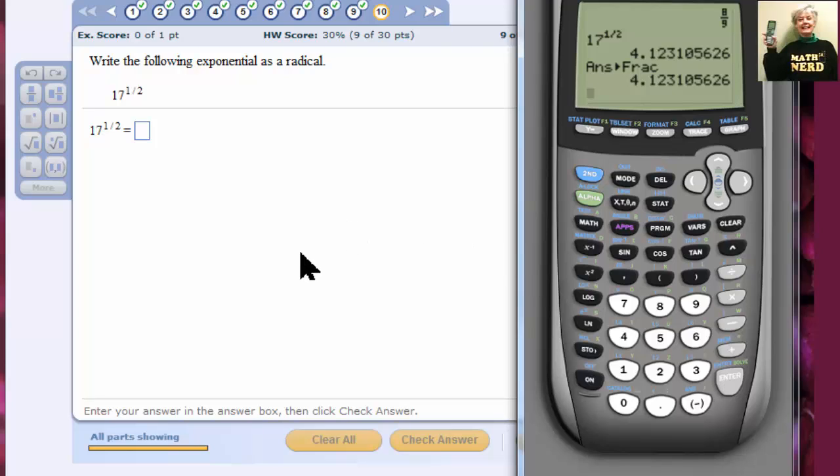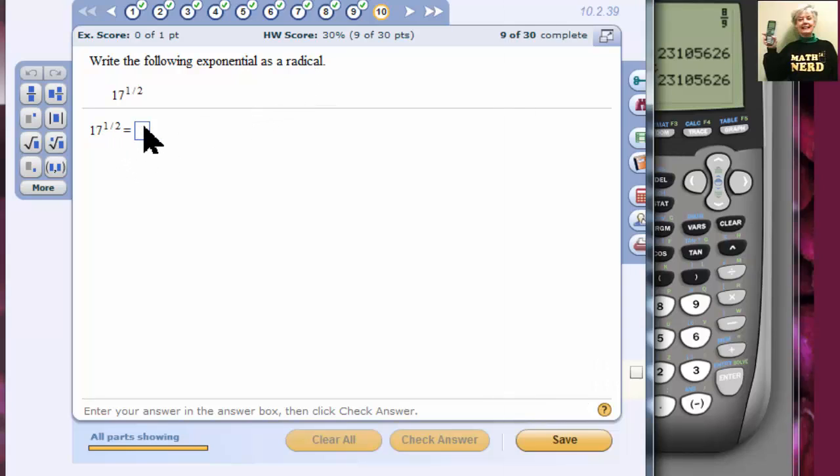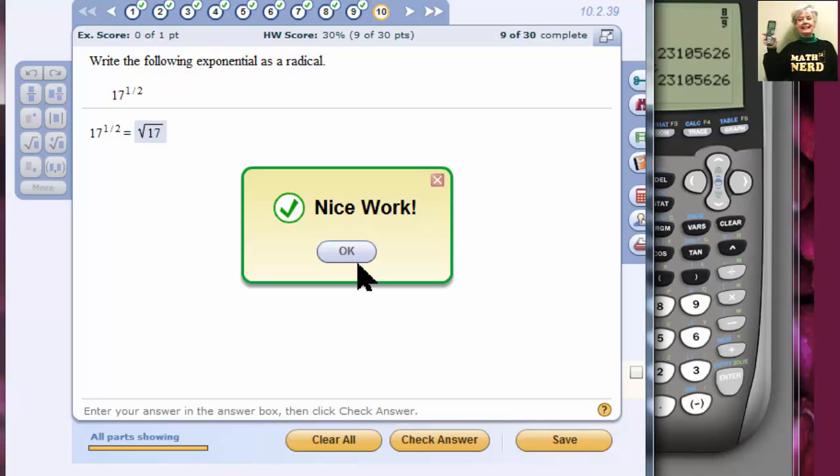So what we're going to do is read the instructions. What a concept! Write the following exponent as a radical. Okay, I can do that. This is going to be the square root of 17. So I go here to the square root key. And I write 17. I type 17 underneath it. I check my answer. Nice work.